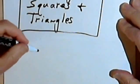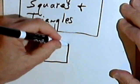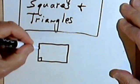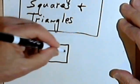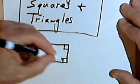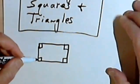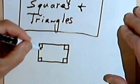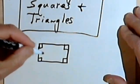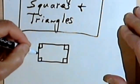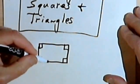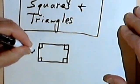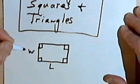A rectangle is a four-sided figure and each of the corners is a right angle, just like the corners on a piece of paper or the corners of a window or most rooms. We can think of the dimensions of the rectangle as the width and the length.